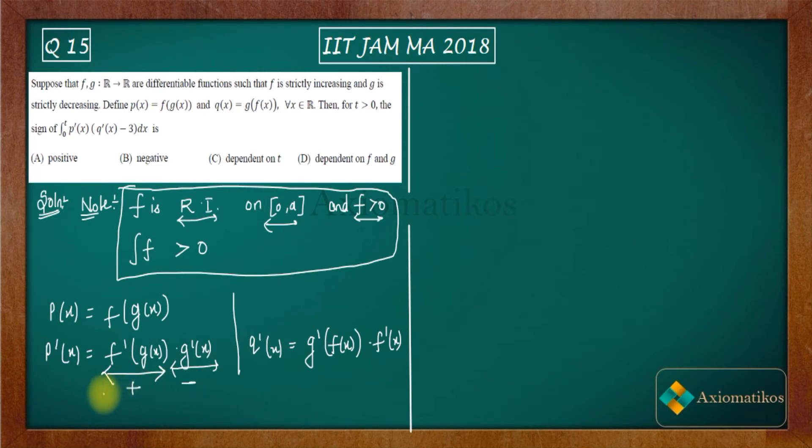So the product of these two will be negative. So p'(x) is less than zero. It is clear from here.